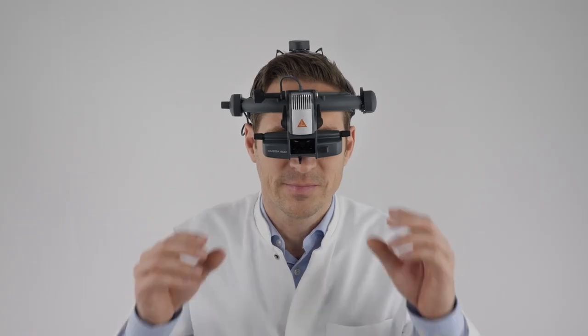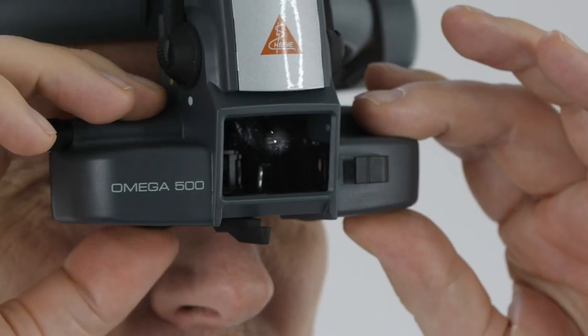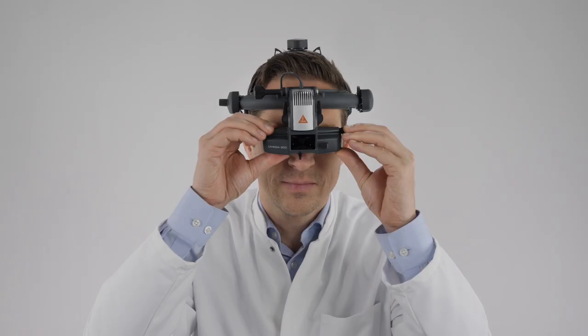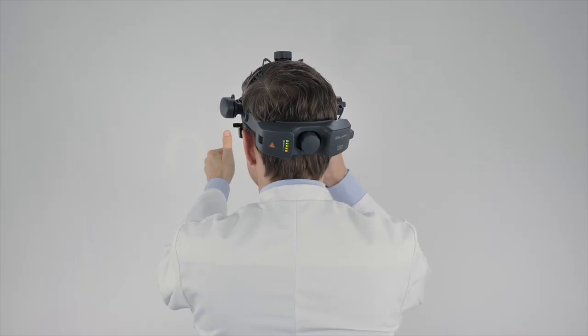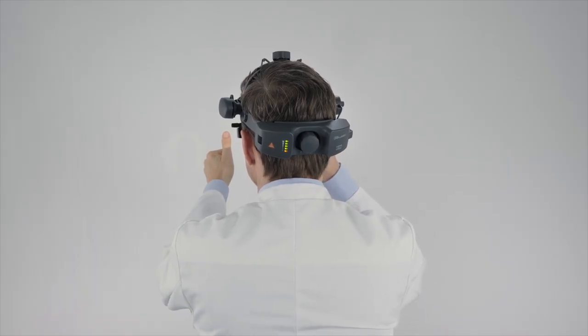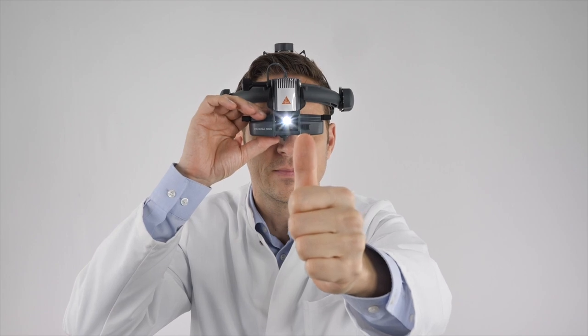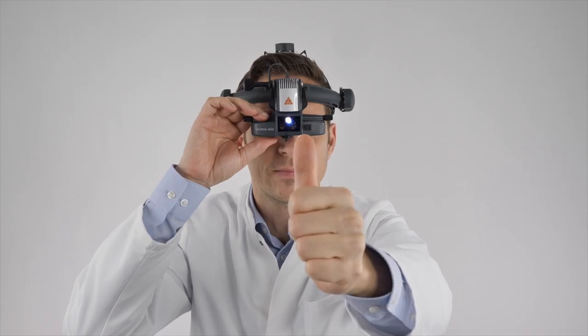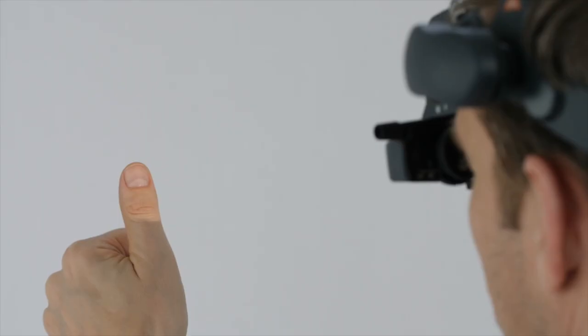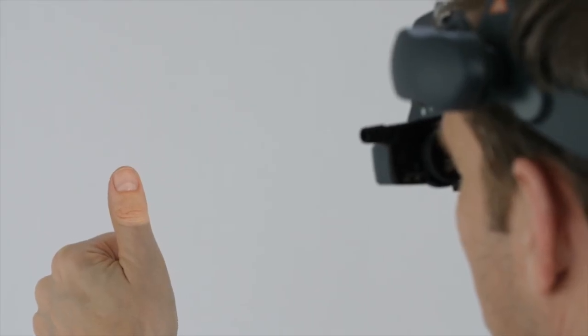Next, adjust the pupil distance. To do this, look at your thumb in the light spot, alternating with the left and right eye, and move the corresponding eyepiece so that the object appears exactly in the center of your field of view. Then use the left or right small knob to align the optical unit so that the light spot appears centered vertically in the view.